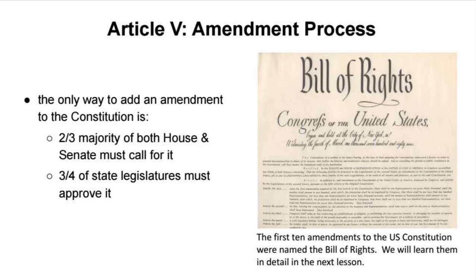Article 5 outlines the amendment process. The founders knew they were not perfect, so they included a process to allow for change over time. The only way to add an amendment to the Constitution today is to have a two-thirds majority vote in both the House and the Senate, after which three-quarters of all state legislatures must approve it. The first ten amendments come to be known as the Bill of Rights — a carrot-on-a-stick approach to get people who were not supportive of the Constitution to support it.